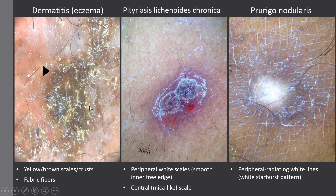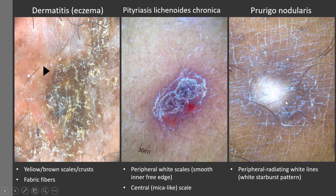In dermatitis, we have yellow scaly crusts, but in dark skin we also have brown scales and crusts due to spongiosis and melanin exfoliation, which makes the skin and crusts brown. We also have fabric fibers, which are quite characteristic for dermatitis. In pityriasis lichenoides chronica, we mainly have peripheral white scaling with a smooth inner free edge and sometimes a central mica-like scale. In prurigo nodularis, the dermoscopic finding is the white starburst pattern, typified by peripheral radiating white lines.